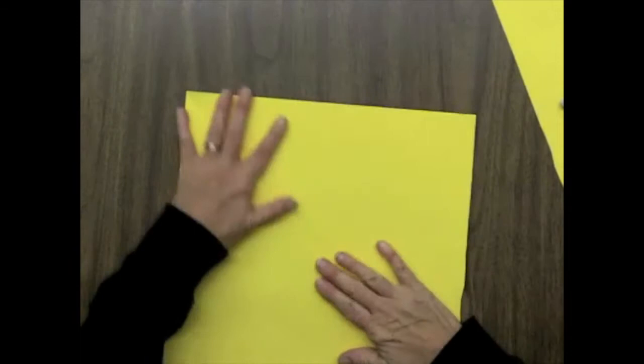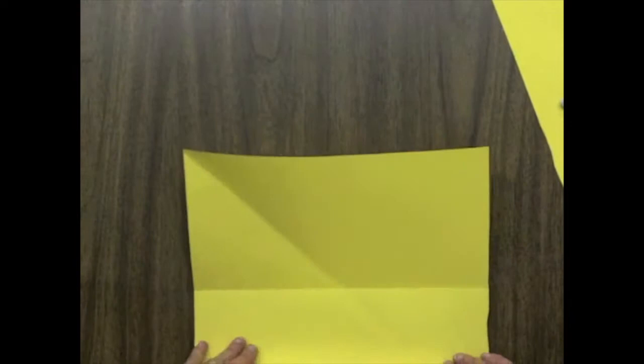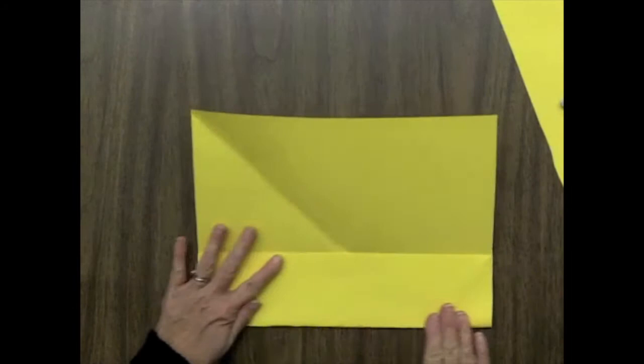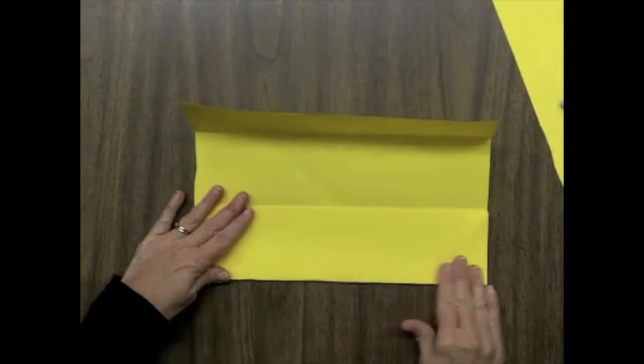Now fold the square in half. Now open it up and fold in one side to that center crease, and crease it, make sure it's lined up with the center crease. And do the same thing over here. Fold it right into the center crease, and crease it.